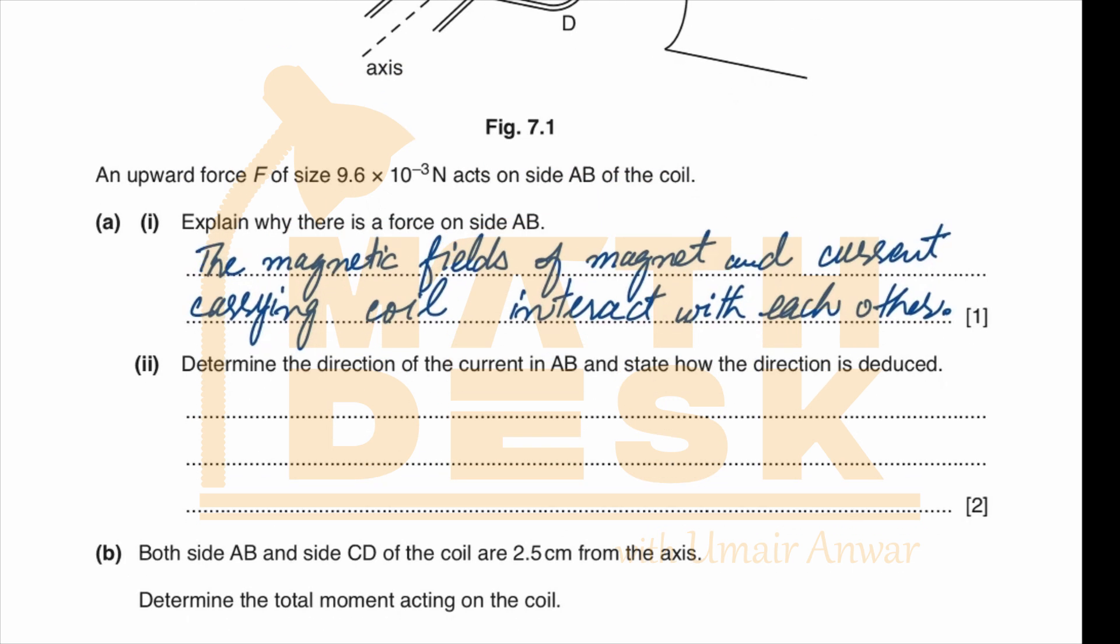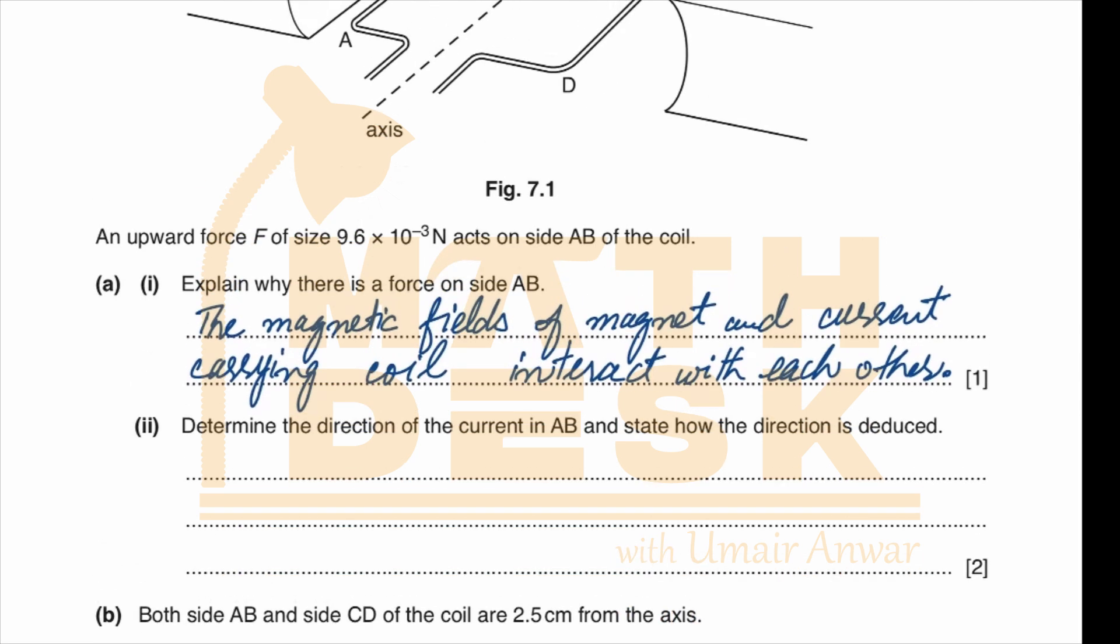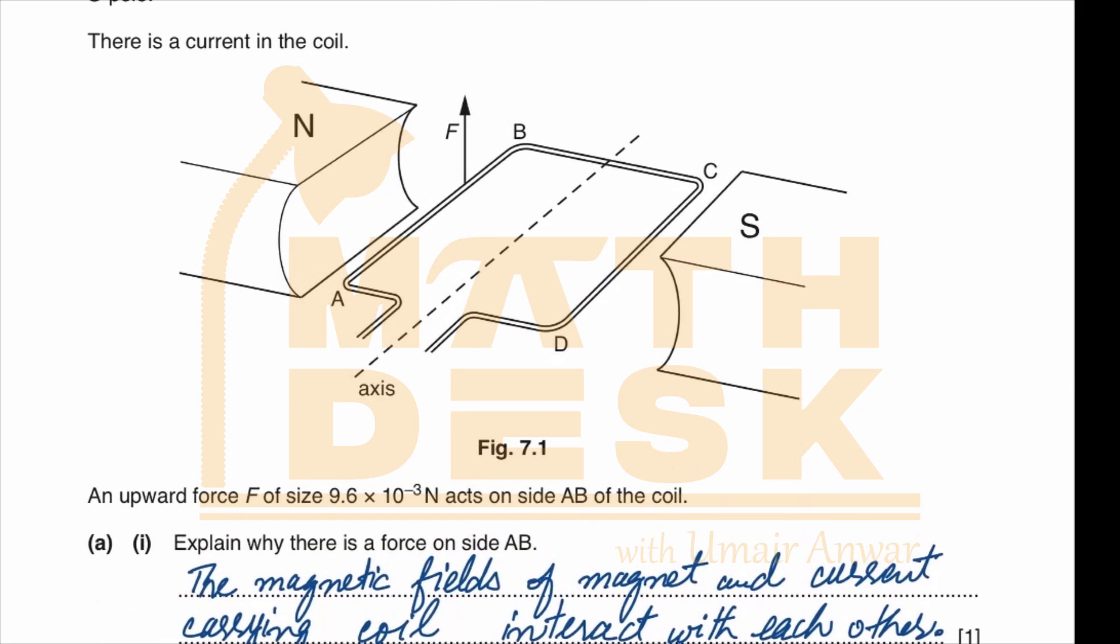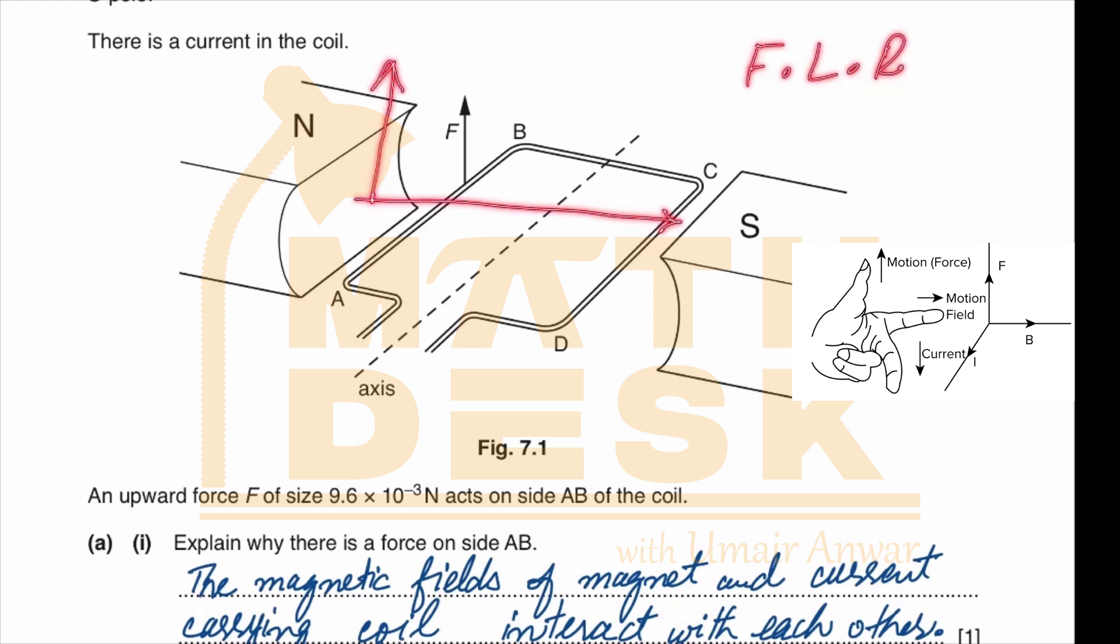Determine the direction of the current in AB and state how the direction is deduced. We use Fleming's left-hand rule. According to Fleming's left-hand rule, the first finger is aligned with the direction of the magnetic field, the thumb is aligned with the direction of the force acting, so the second finger gives us the direction of the current.